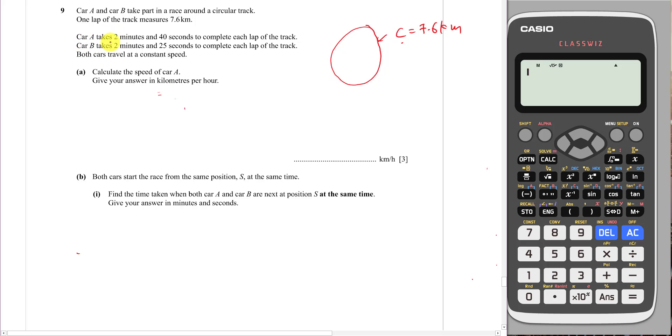Car A will take 2 minutes 40 seconds to complete one lap of the track. If I convert 2 minutes 40 seconds into seconds, it's 120 seconds plus 40 seconds, so it'll be 160 seconds. This one is 120 seconds plus 25 seconds, which is 145 seconds. From here we know car B actually has the faster speed. Car A is just slightly slower.